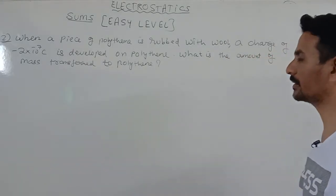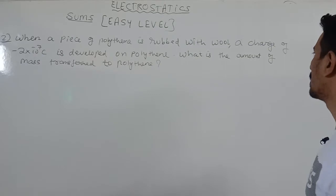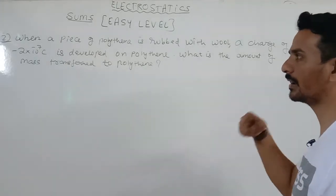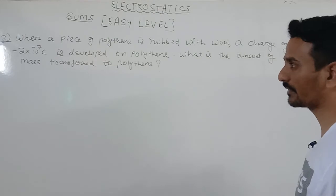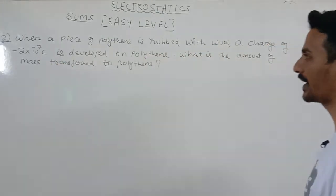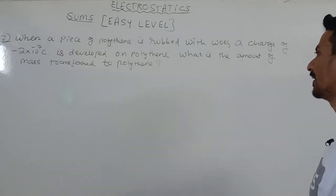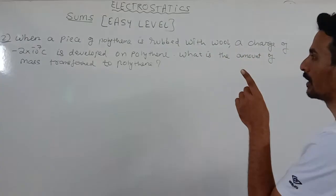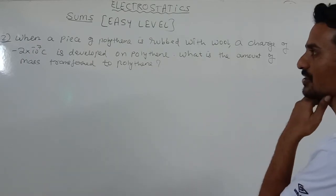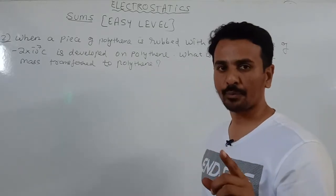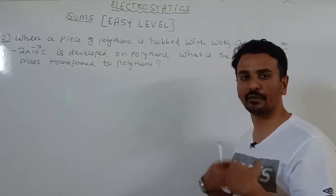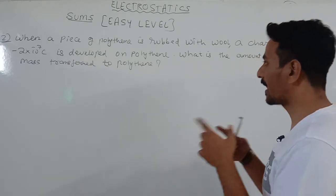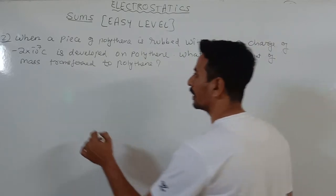Second question: when a piece of polythene is rubbed with wool, a charge of minus 2×10⁻⁷ coulomb is developed on polythene. That means polythene is gaining electrons, and since electrons are negatively charged, the charge on polythene is minus 2×10⁻⁷ coulomb. The question asks what is the amount of mass transferred to polythene. Since polythene has gained electrons and acquired negative charge, we first find the number of electrons transferred.